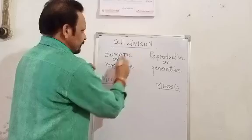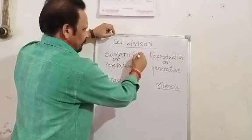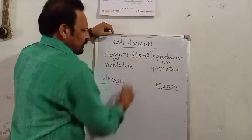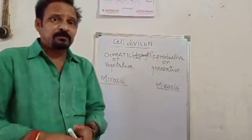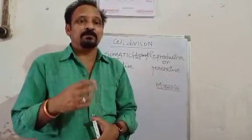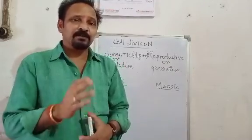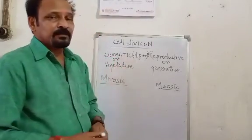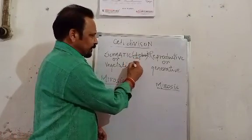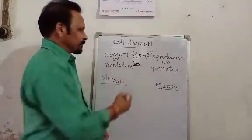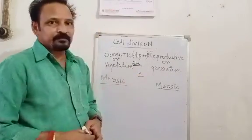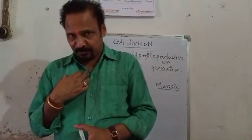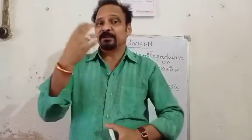One term is diploid. Somatic cells are diploid in nature. Diploid — the 'di' prefix means two. Diploid means when chromosomes are present in pairs in any cell, such a cell is known as diploid. For example, in our human body there are 23 pairs of chromosomes.